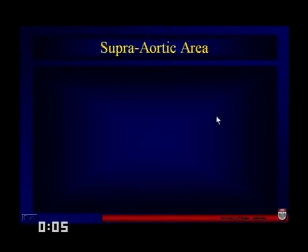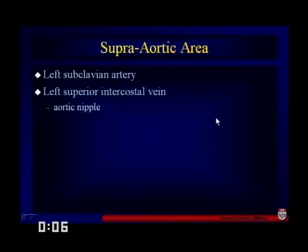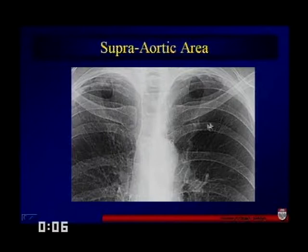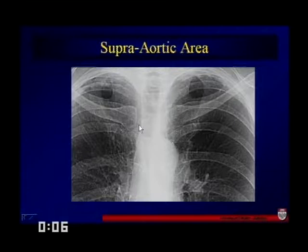The supra-aortic region and left paratracheal region should contain things like the left subclavian artery and the left superior intercostal vein — something that can sometimes show up as an aortic nipple. This is the supra-aortic area that includes the left paratracheal stripe. It's normally a little bit thicker and less defined than the right paratracheal region, fades off superiorly, with a well-defined aortic arch.